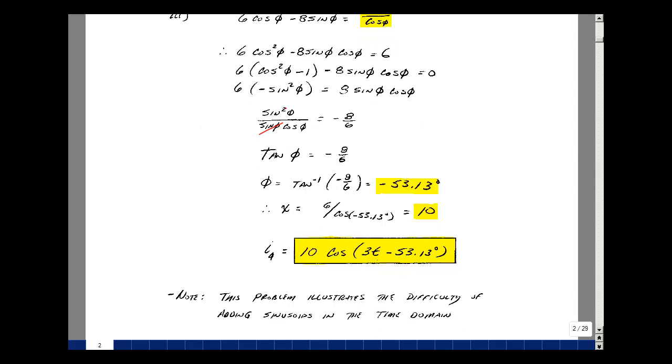In doing this problem, it took almost a full page to add three cosine functions together with different amplitudes and angles. This is a difficulty with working in the time domain. This is why we're doing phasor analysis. We have a technique that lets us map the time domain into the frequency domain where the manipulations become much simpler, and we map back into the time domain. We won't use this kind of technique again in this chapter or the rest of the course. This is Supplemental Problem 8.2.